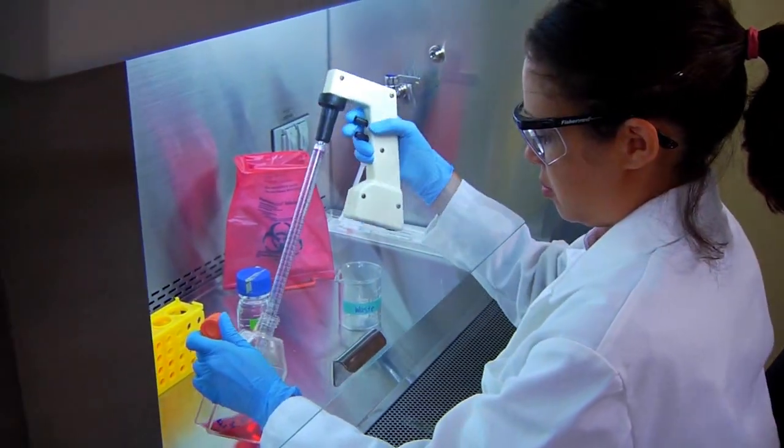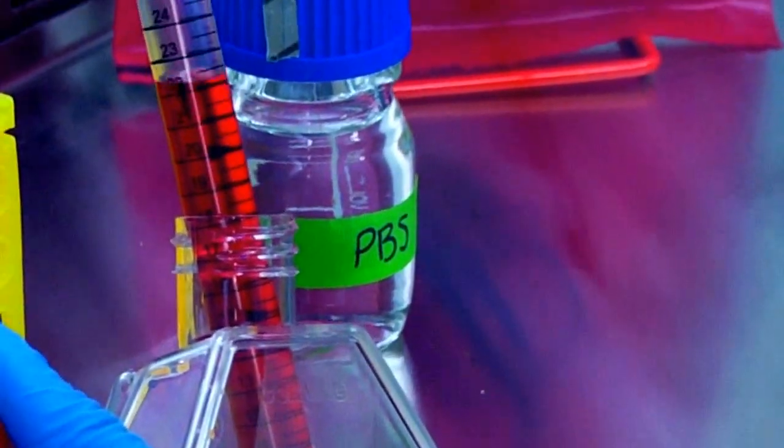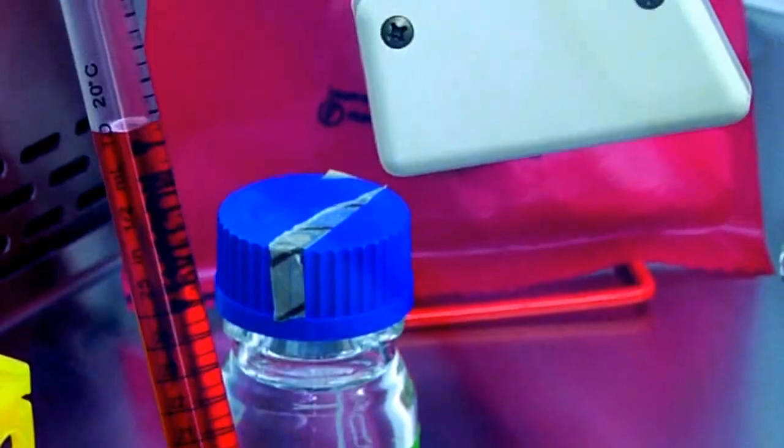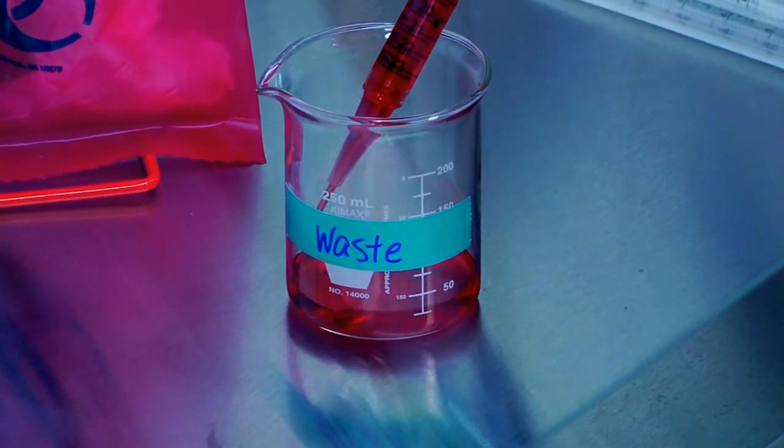Under the vertical flow hood, remove and discard the culture medium into a waste beaker that contains approximately 100 milliliters of bleach. The bleach is used to kill any cells or microbes that are left over.